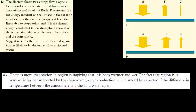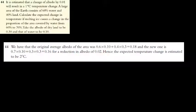For question 43, identify arrow sizes in the diagram — B is larger for both evaporation and conduction. The last question uses a weighted average calculation from mathematics to find the new average albedo, then determines the expected temperature change based on that new albedo value. Thanks for watching.